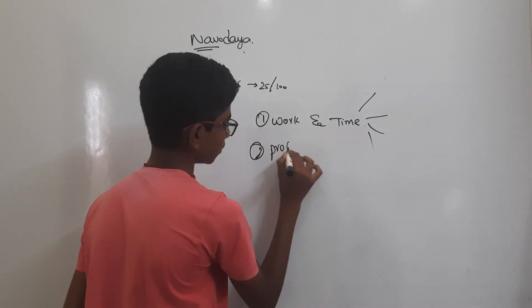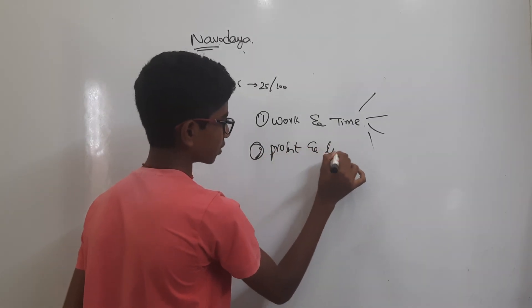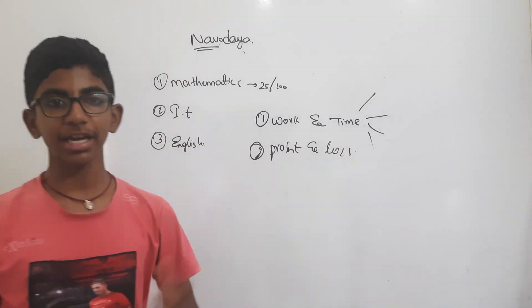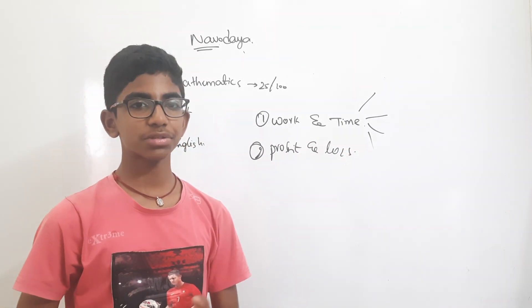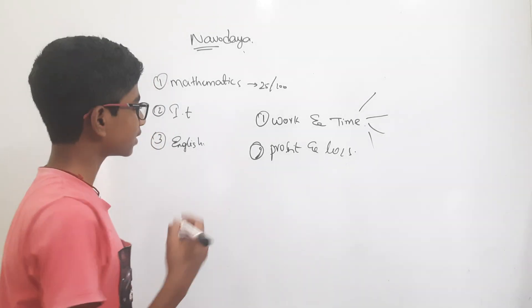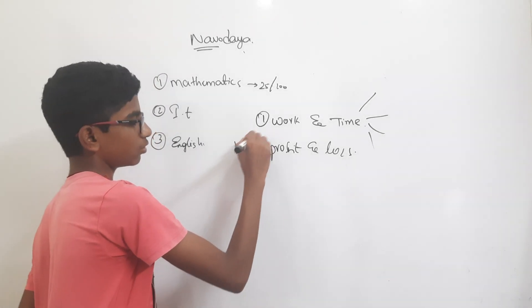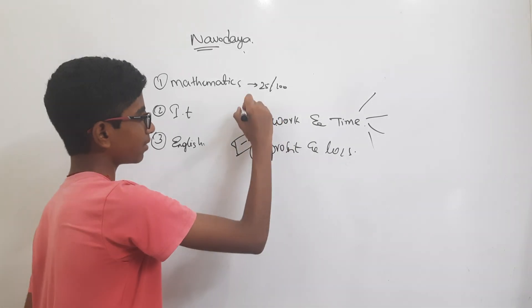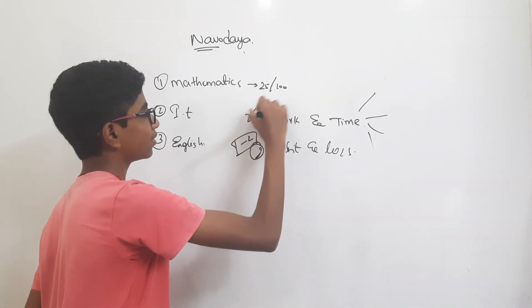Profit and Loss is also an easy lesson. We can learn it very easily. This lesson will contain minimum one to two bits in the exam. In Work and Time, we will get two to three bits.